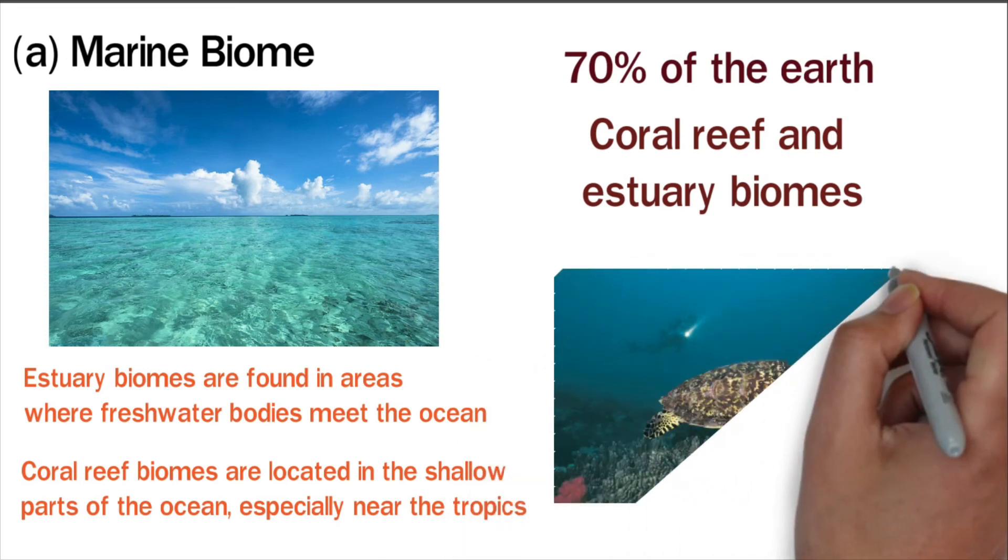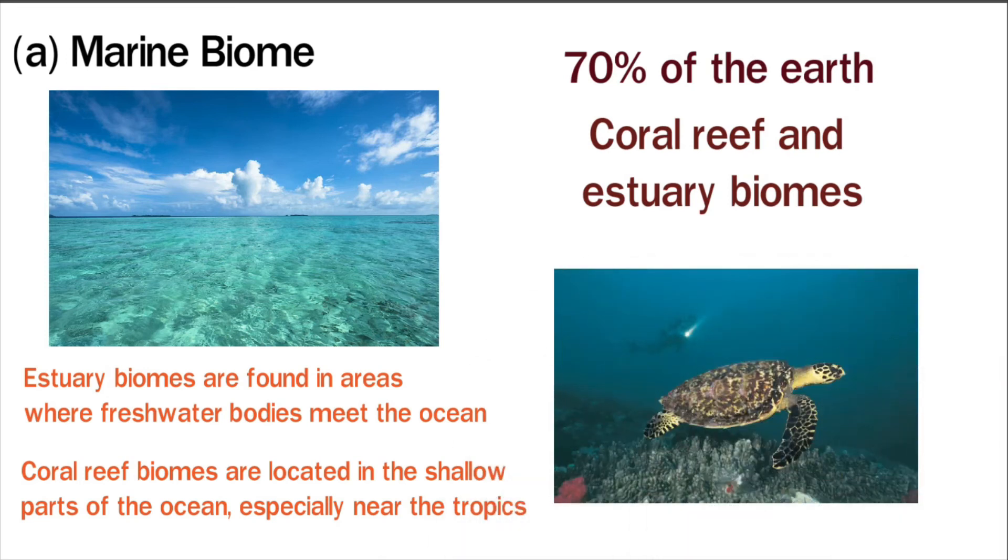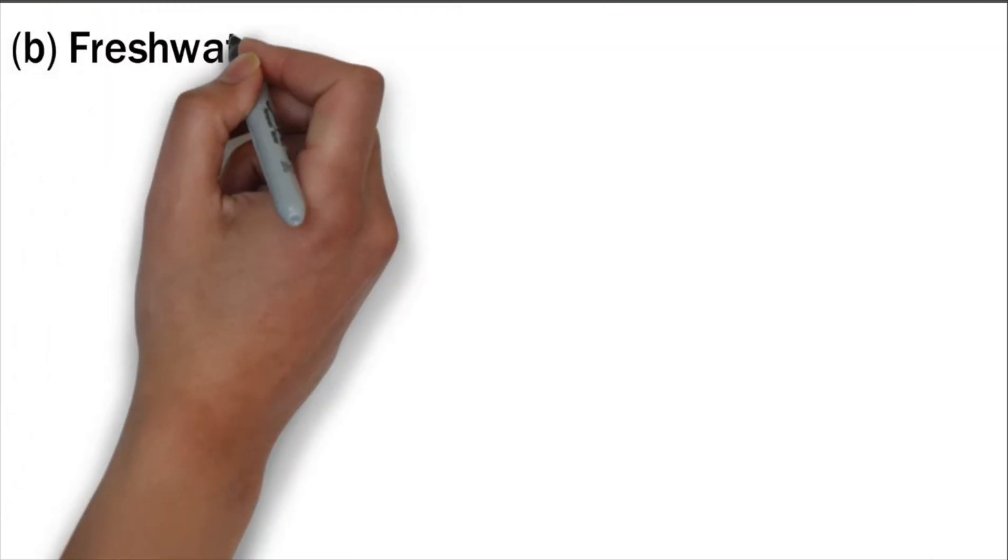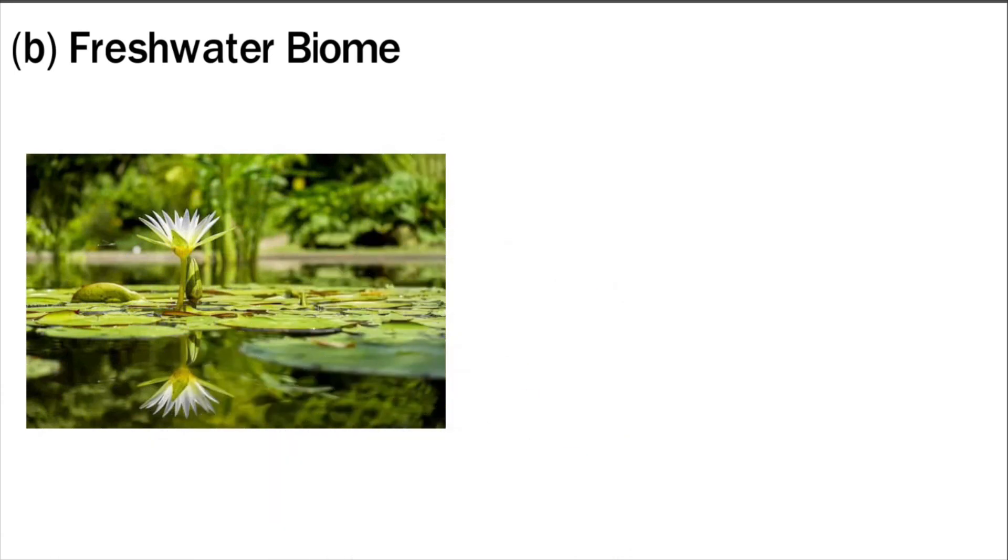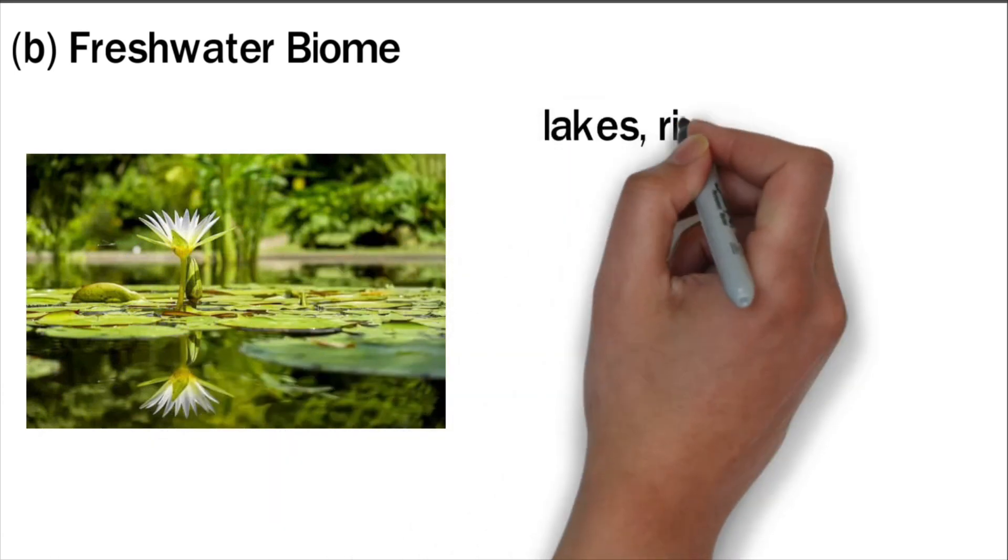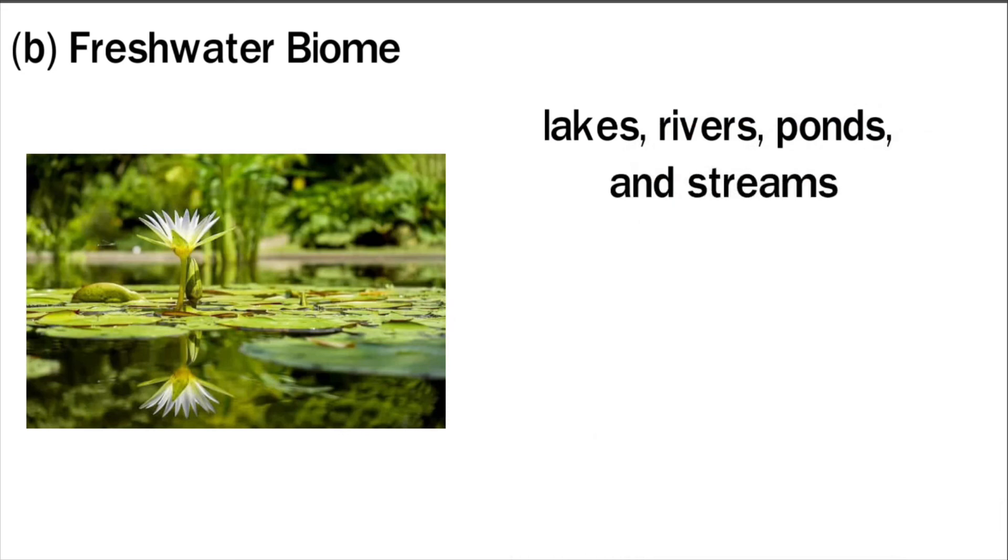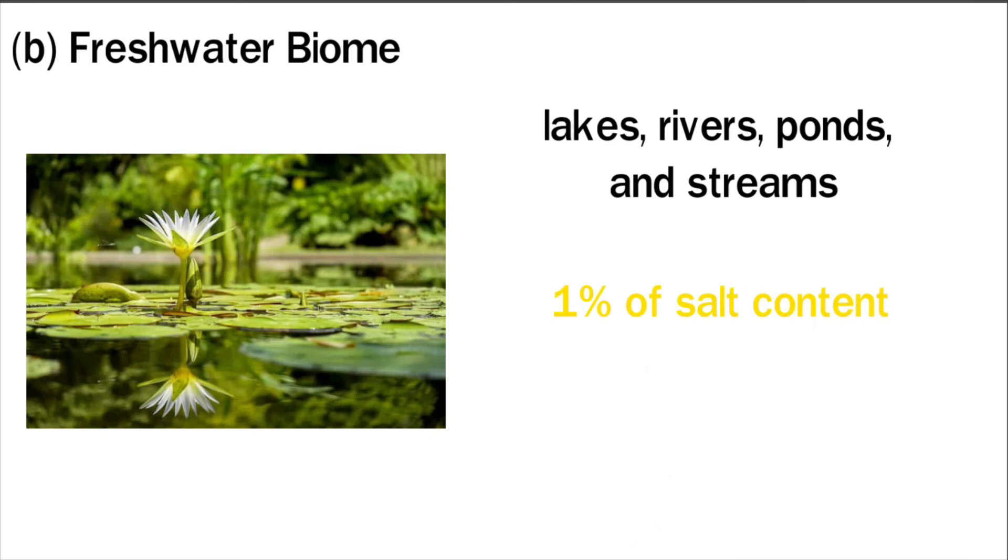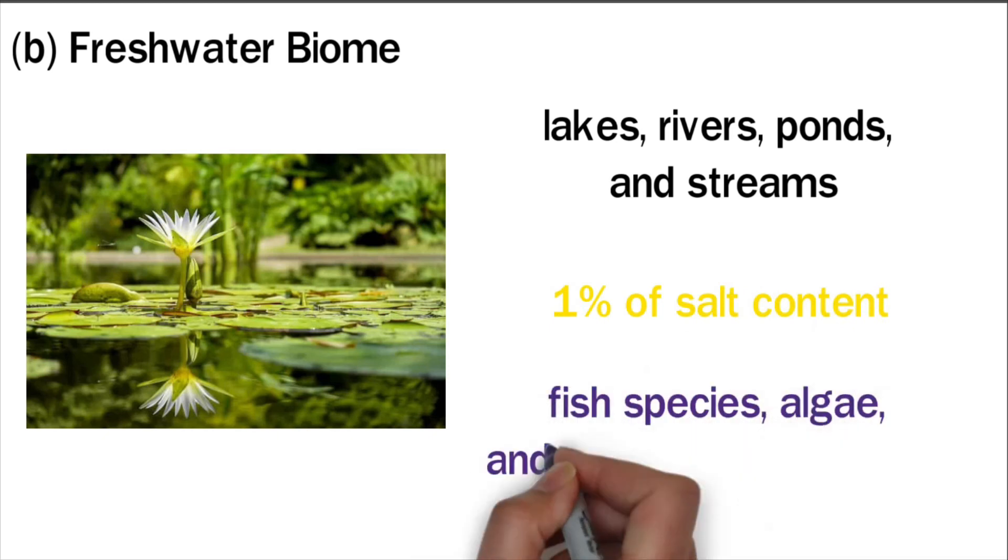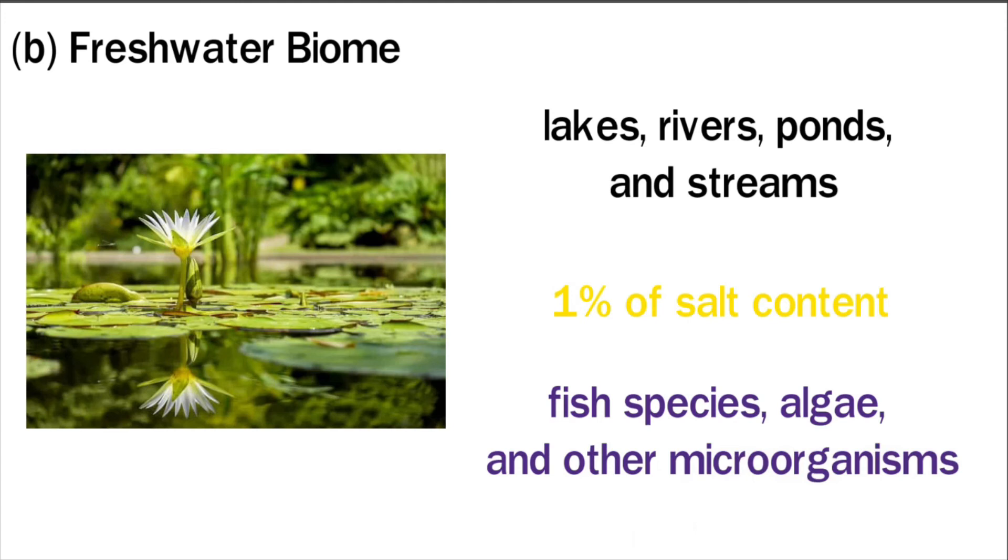Freshwater biome: Freshwater biomes consist of both small and large water bodies that are surrounded by land. This includes lakes, rivers, ponds, and streams. These biomes contain less than 1% salt content. Freshwater biomes host a wide range of fish species, algae, and other microorganisms that are not adapted to saltwater.